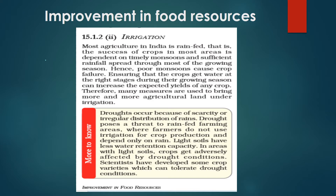Irrigation is the process of distributing water to the crop. Most agriculture in India is rain-fed, meaning the success of crops in most areas is dependent on timely monsoons and sufficient rainfall spread through most of the growing season. Hence, poor monsoons cause crop failure. Ensuring that crops get water at the right stage during their growing season can increase the expected yield of any crop.